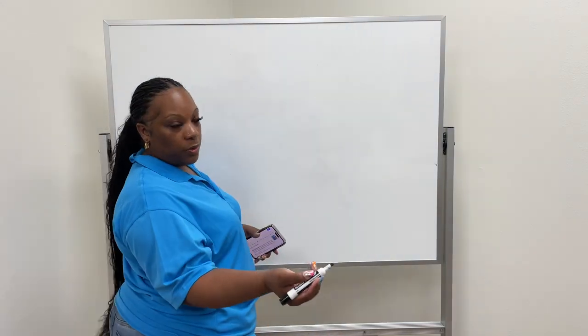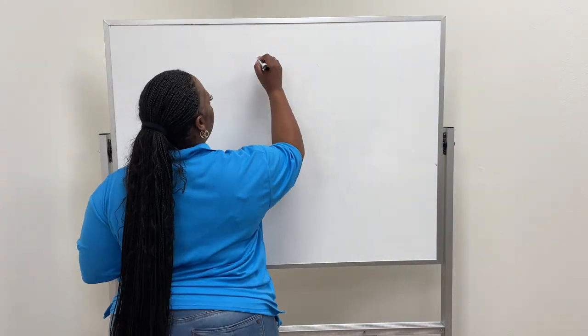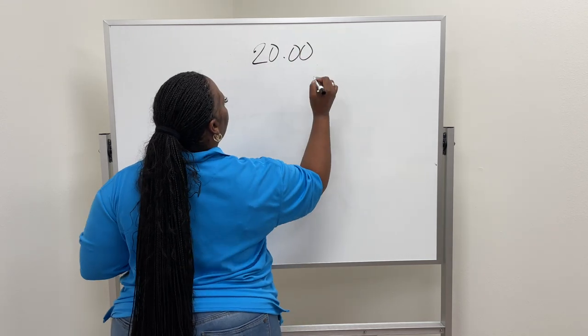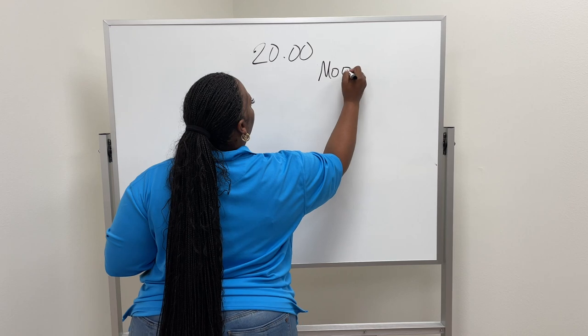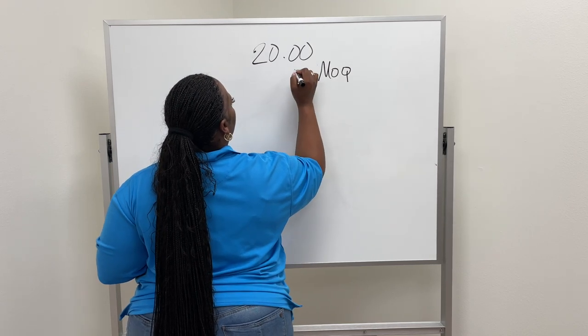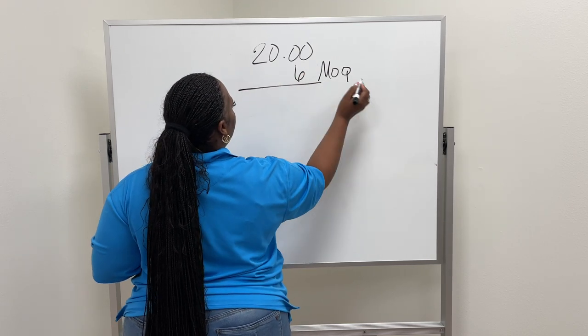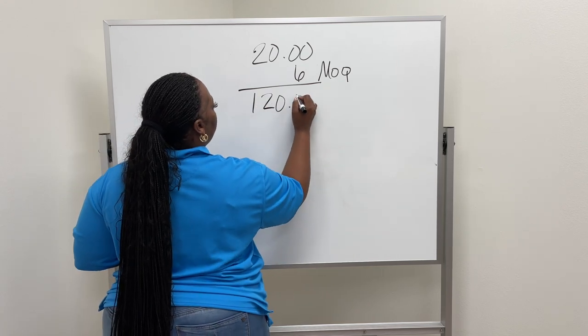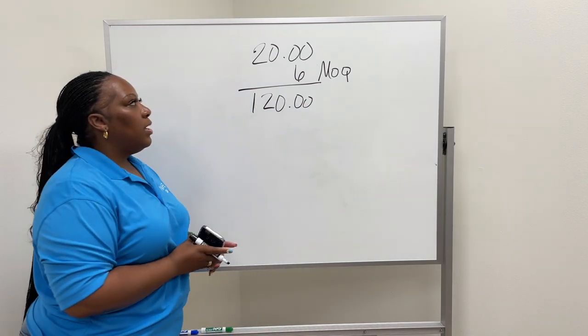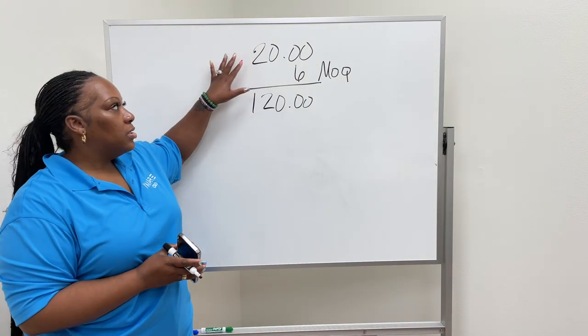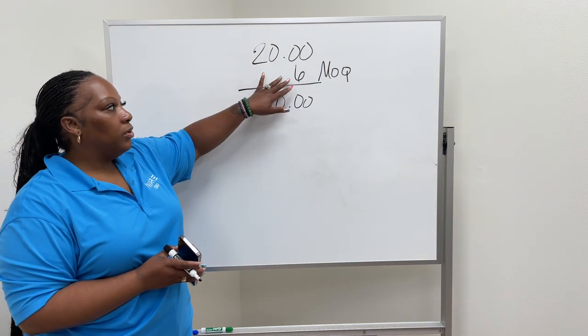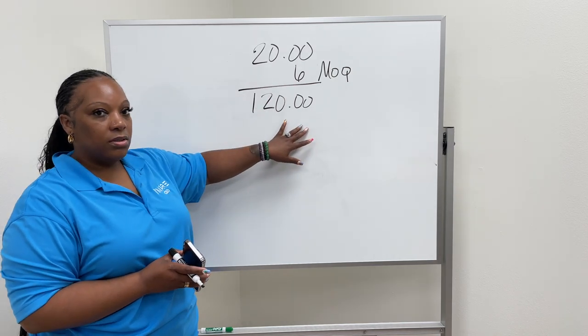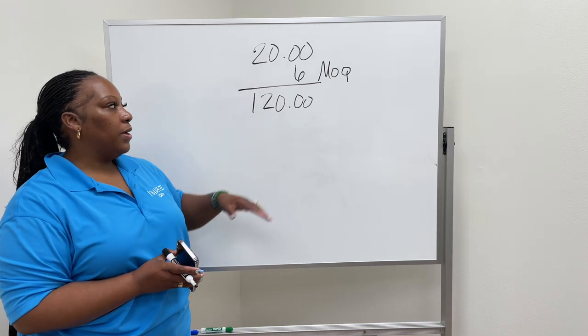We'll use an example of twenty dollars, so each piece is twenty dollars, and your MOQ is six. That's six pieces, so that adds up to a hundred and twenty dollars. That means you're getting the item at twenty dollars each, the MOQ is six, and when you multiply that together it's $120.